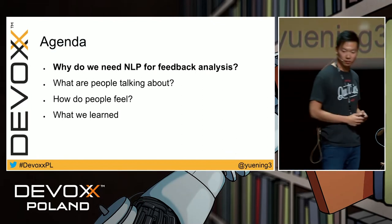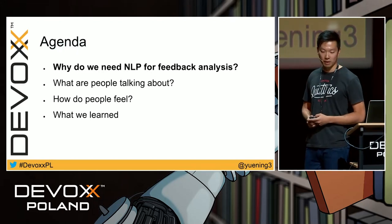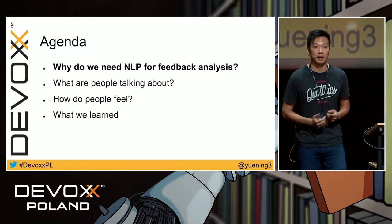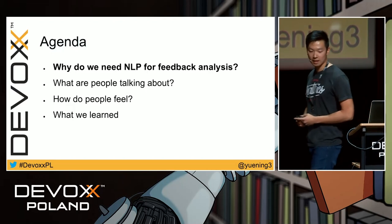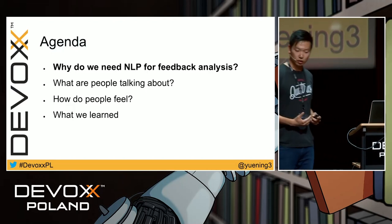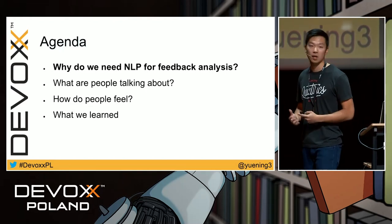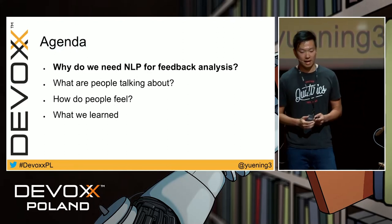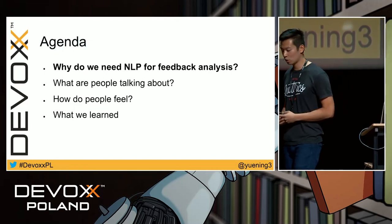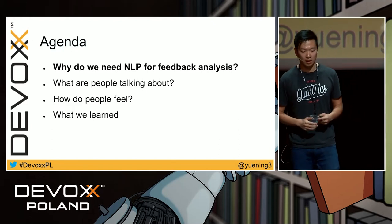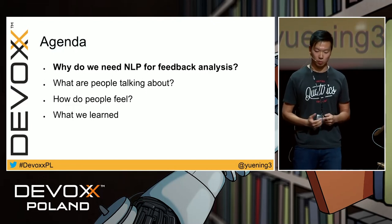The agenda for today: before we go into the models, let's first talk about some background — why do we need NLP for feedback analysis? There are other ways to do that. After that, we'll talk about how to solve two major problems: first, what are people talking about in the feedback? And second, for the things people are talking about, how do they feel about them? We'll look at neural network models and see how we can leverage them to solve these two problems, then summarize what we learned.